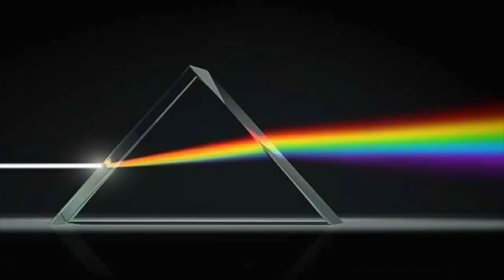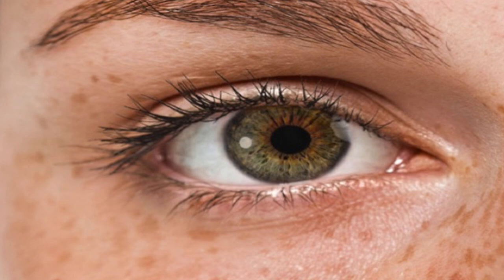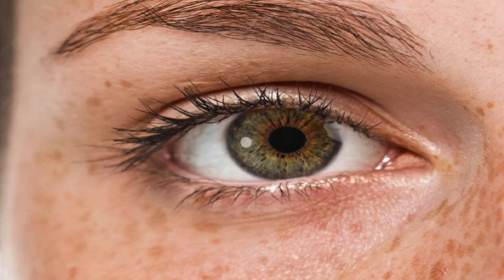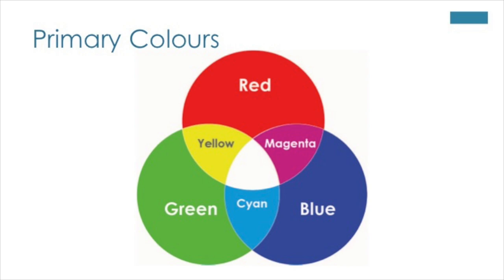Our world is filled with electromagnetic radiation. On one end we have gamma rays and X-rays, and on the high end we have microwaves and radio waves, and in between these two we have the visible spectrum. Humans can see these colors because at the back of our eye we have cone cells — three different types: one for blue, one for red, one for green. These three colors make up the primary colors, and through their combination you can make all the colors of the rainbow.